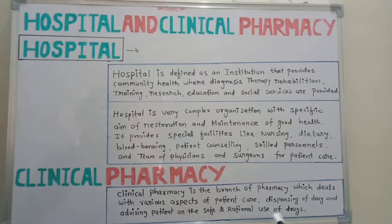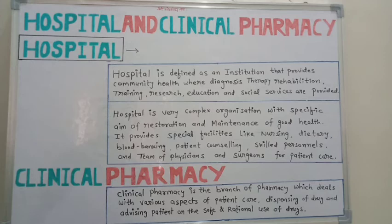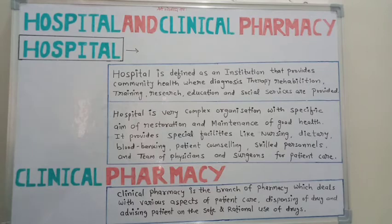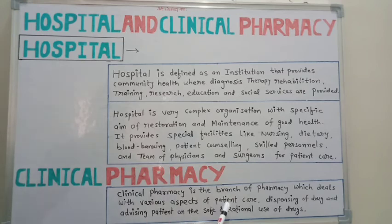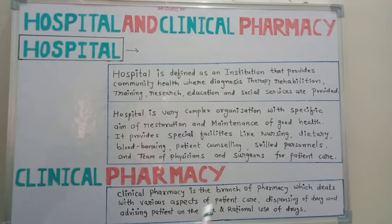So clinical pharmacy is very easy to understand. To summarize: a hospital is an institution where diagnosis, treatment, therapy, rehabilitation, training, research, education, and social services are provided. Clinical pharmacy is a branch of pharmacy which involves patient care, dispensing drugs, and advising patients so that they can use their drugs safely and rationally.